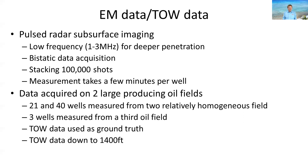The ground truth data we have from TOWs was acquired on two large commercial producing oil fields. The first field gave us access to 21 temperature wells and the other had 40 wells. Near these wells we also acquired our electromagnetic data. In addition, we had access to a third oil field on which we measured only three temperature wells with accompanying electromagnetic data. The TOW data is used as ground truth, typically up to a depth of about 1,400 feet, or approximately 350 meters.